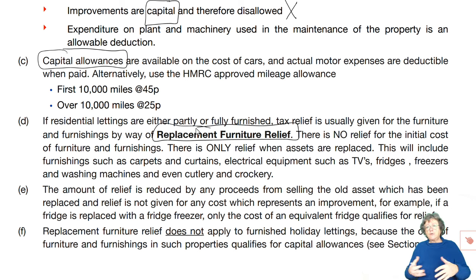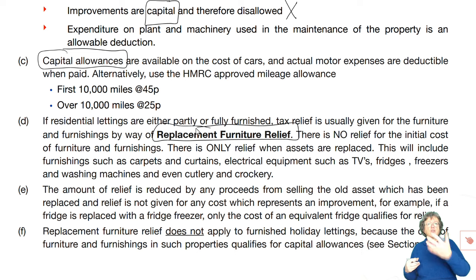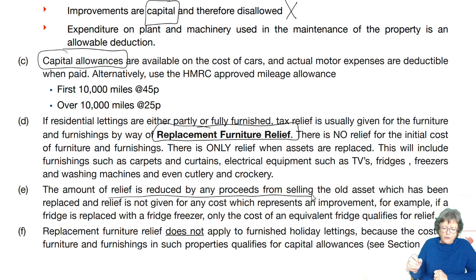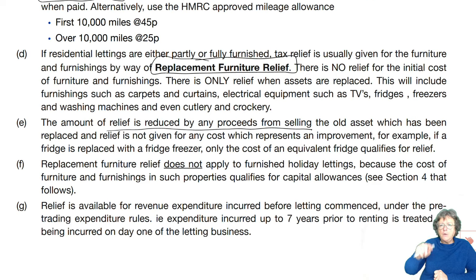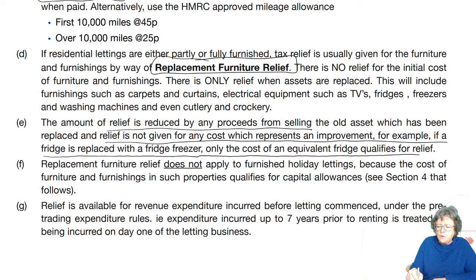Carpets, curtains, electrical equipment, beds, wardrobes, kitchen equipment — all of that sort of stuff — but only when you are replacing it. If you get cash for the item — say you have a washing machine and you sold it — that comes off the relief you're allowed. The amount of relief is reduced by any proceeds from selling the old asset. Also, you can only have like for like. Relief is not given for any cost which represents an improvement. For example, if a fridge is replaced with a fridge freezer, only the cost of the equivalent fridge qualifies for relief.